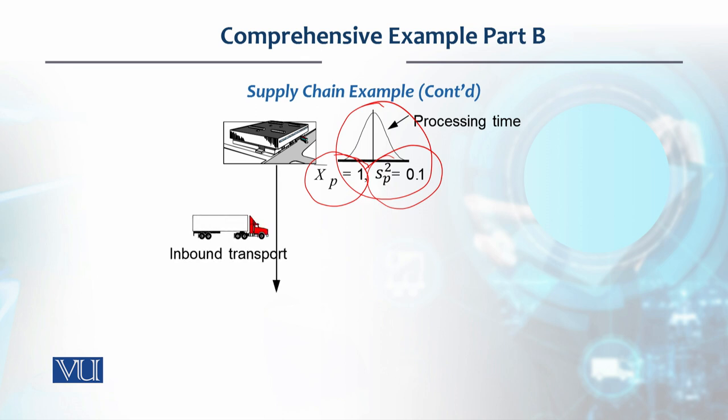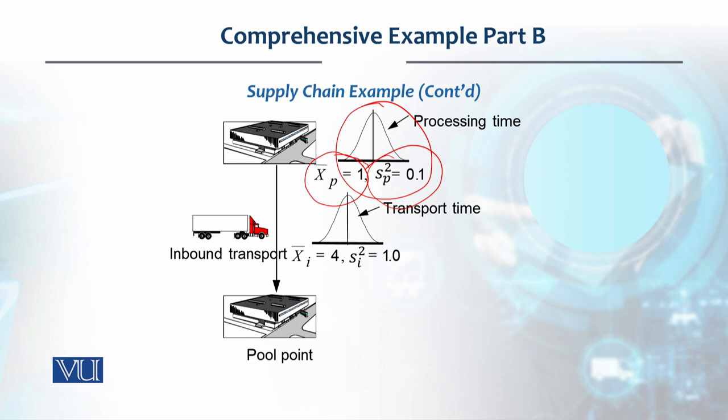Now from here, processed material comes out and goes to inbound transport. On that basis, it reaches the pool point. This transportation time is also variable with average time 4 and variance of 1.